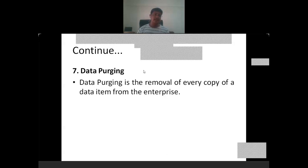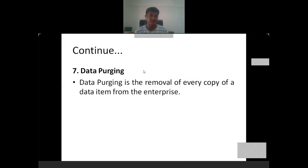The last stage of the data lifecycle is data purging — the removal of every copy of a data item from the enterprise. Once the data are no longer required at all, there is no need to keep the data in the database. We will remove those particular data from the enterprise database. This is the last stage.